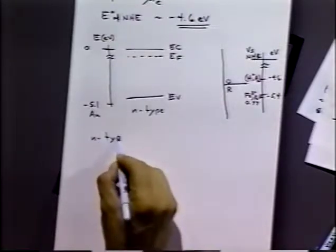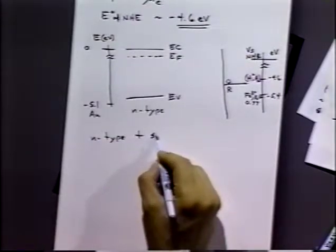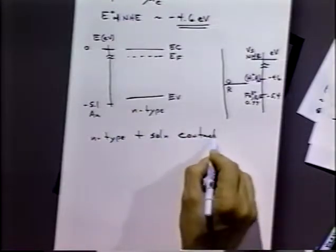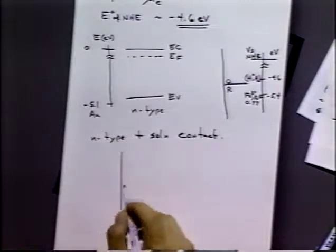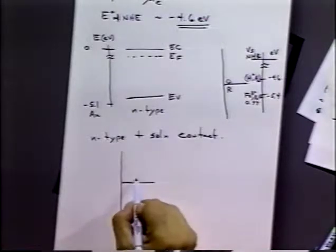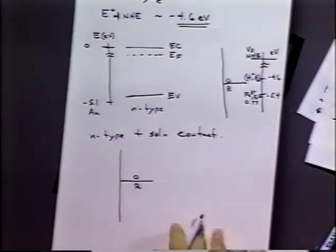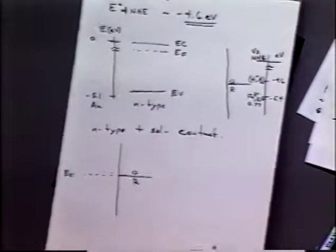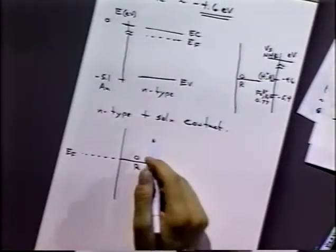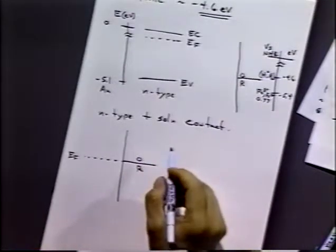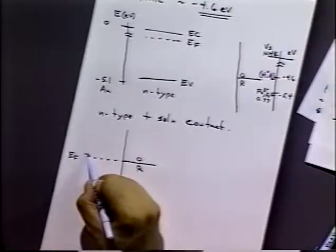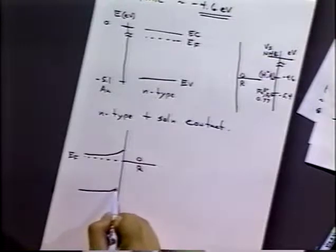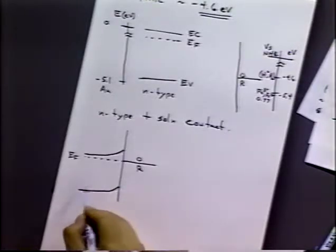For n-type and solution contact, here is our interface, and here are species O and R. The Fermi level lines up with species O and R. What happens now is the bands do what they call a bending — we get band bending in the system.